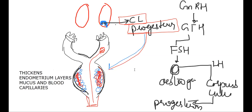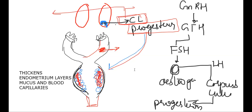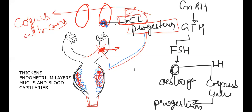If the sperm doesn't come and fertilization doesn't happen, the secondary oocyte — still at meiosis 2, metaphase 2 — will disintegrate. The corpus luteum also degenerates and forms the corpus albicans. With no corpus luteum, there is no progesterone. Without progesterone, the thickened endometrium layers are released out — this is menstruation.